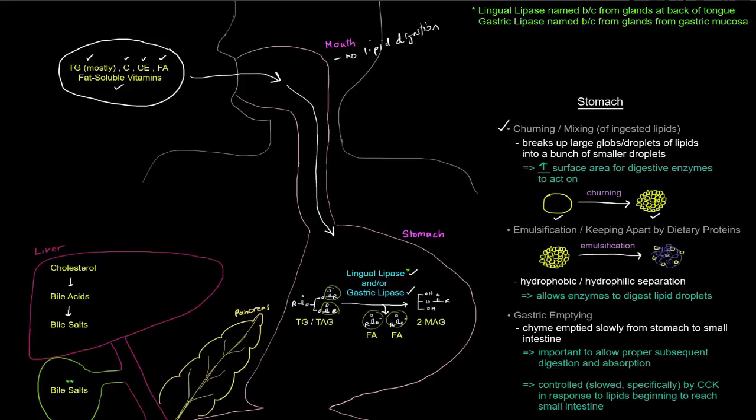And then the rest of it ends up being a monoacylglycerol, a 2-monoacylglycerol, the 2 meaning because that acyl group is on carbon number 2. And so lingual lipase is named for the glands at the back of the tongue and gastric lipase is named for the glands in the gastric mucosa.